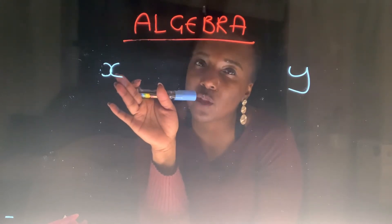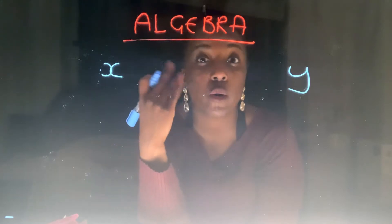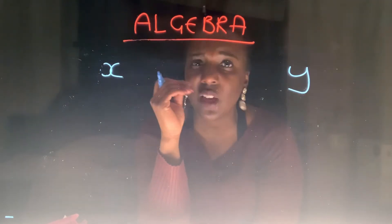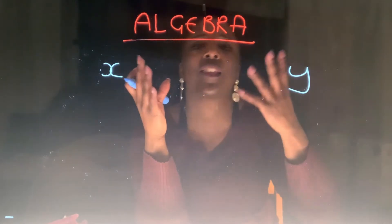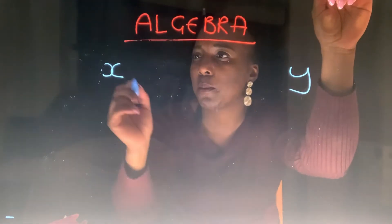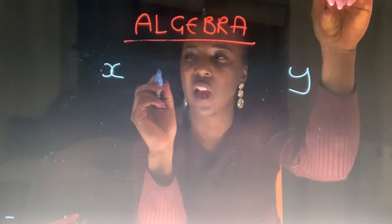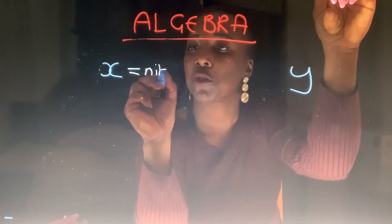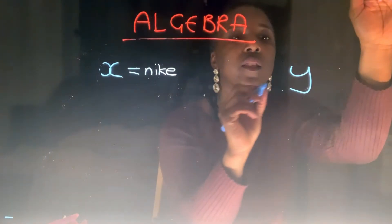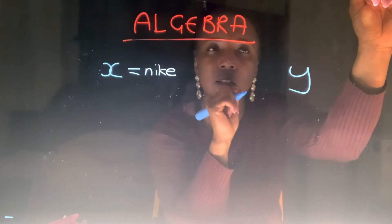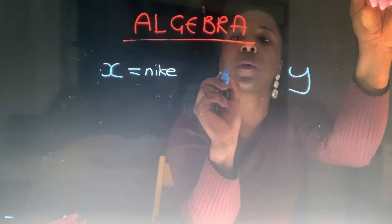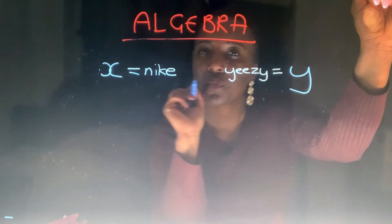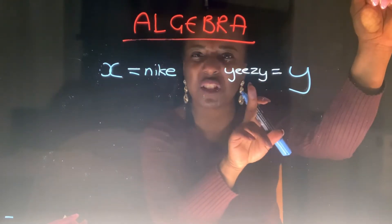Now, it doesn't matter how many times that X shows up in a particular equation or expression — we're going to go into that in another video — but that X holds a particular value. Let me try and put it in a way that you guys might understand. I want you to imagine that this X represents a pair of Nike trainers, and this Y is going to represent a pair of Yeezys. So X is representing our Nikes and Y is representing our Yeezys.